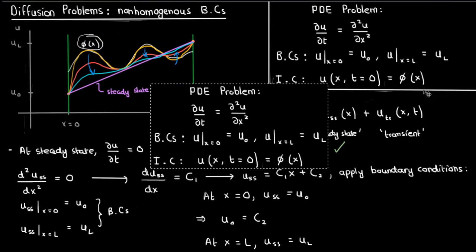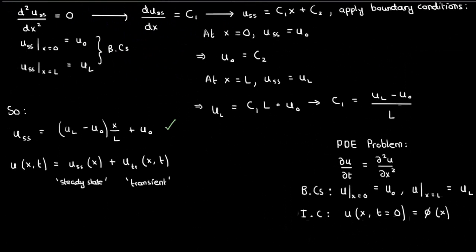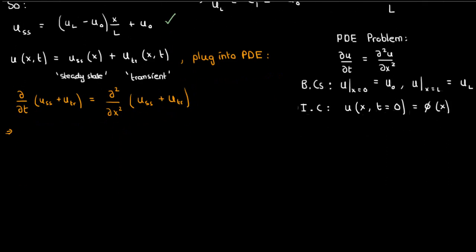Once again, let's go back to our PDE problem. We know from what we said before that the solution u is composed of the sum of a steady state solution and a transient solution. So if we plug this into our PDE, we'll get ∂(u_ss + u_tr)/∂t equals the second partial derivative of u_ss plus u_tr with respect to x. Because the derivative of the sum is the sum of the derivatives, we can split up the terms.